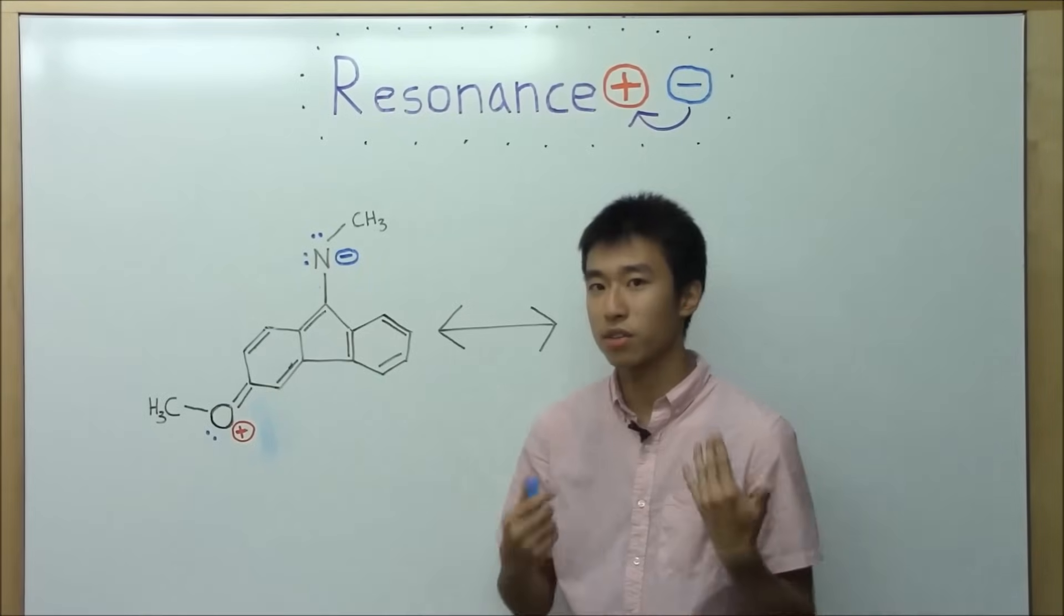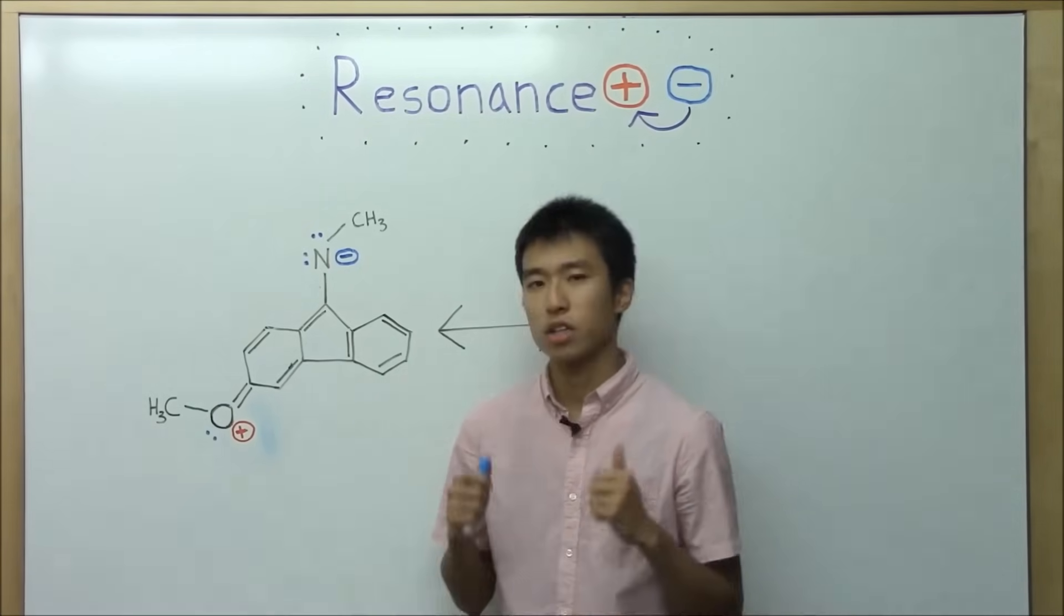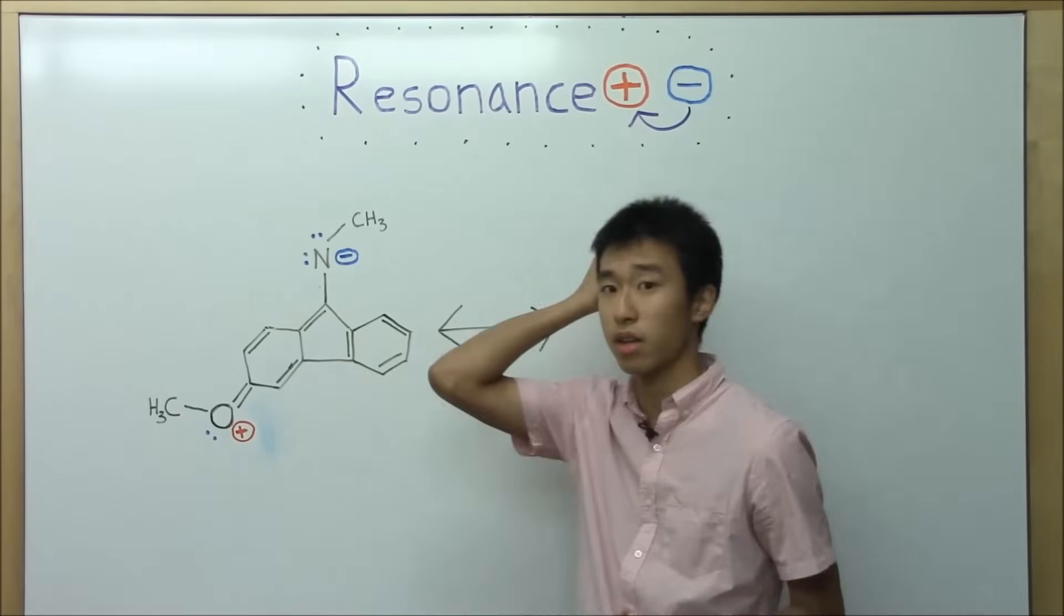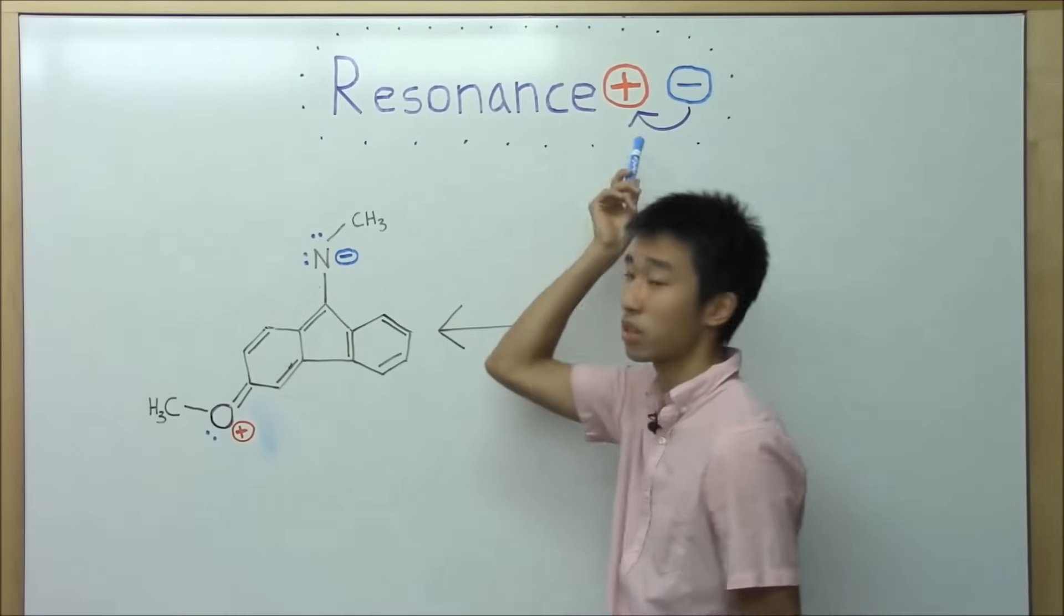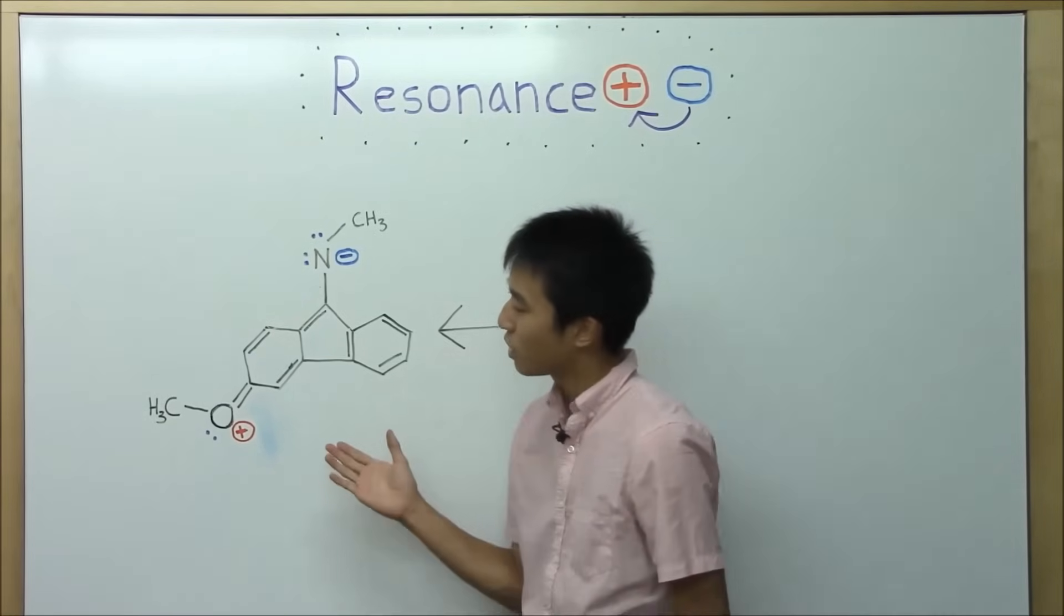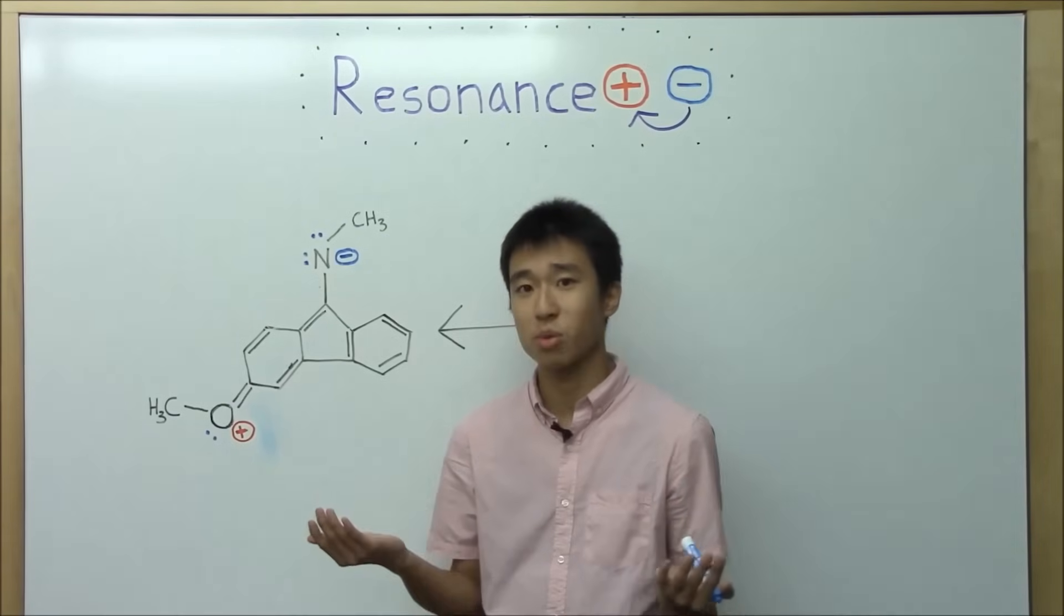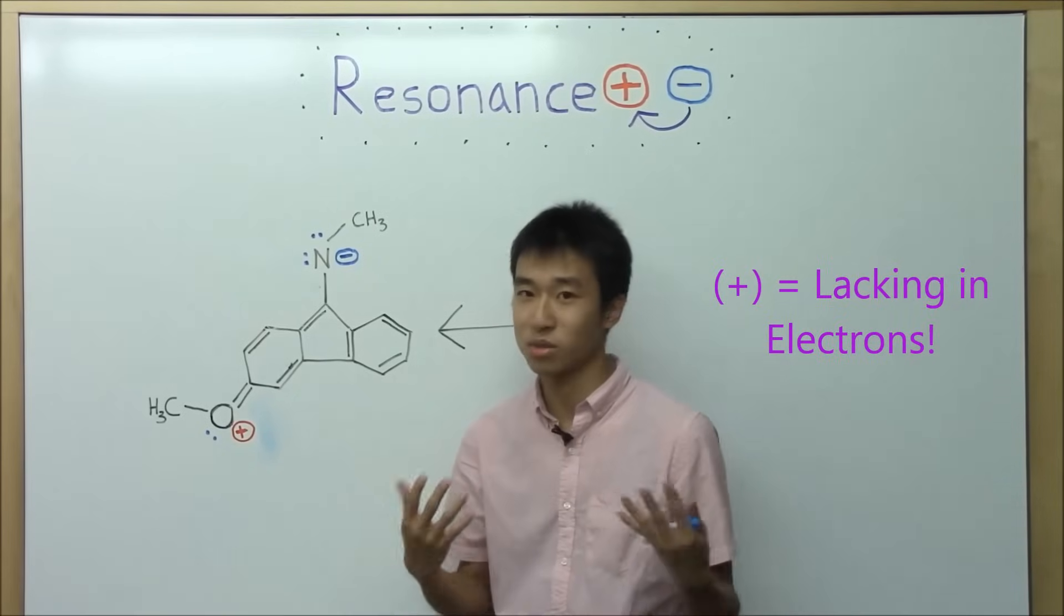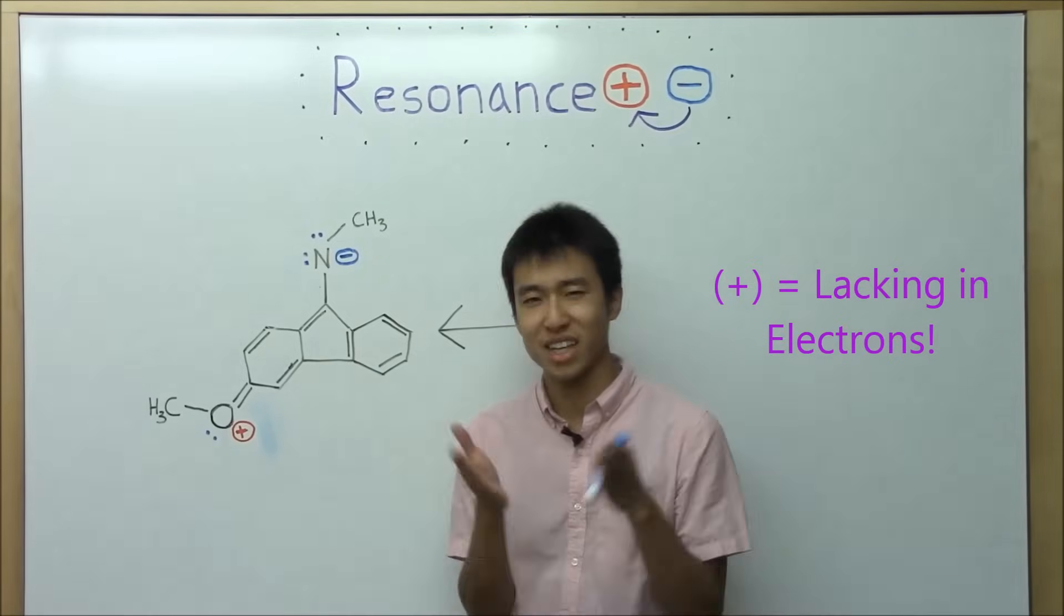And so before we begin, the first thing I want you to know or think about is that just think about resonance as simply taking electrons from the area that has excess electrons, so it's usually going to be a negative charge, and bringing it to an area that has positive charge. So the reason why I think that way is because you have to realize that the positive charge is just an area that has no electrons, more or less. That's why it's positive, because it's missing some negatively charged things, and those things are electrons.